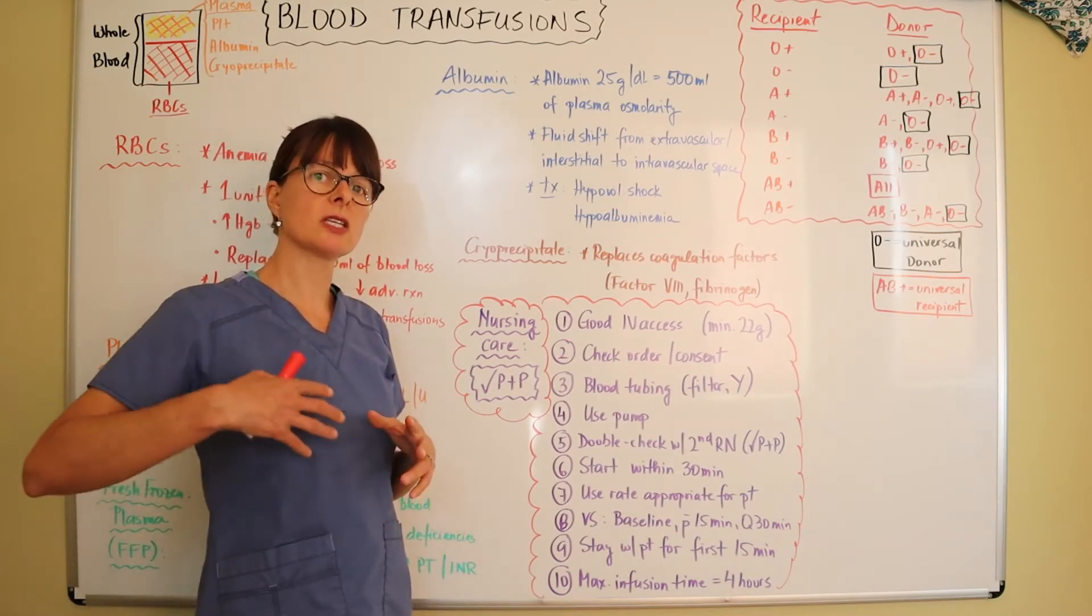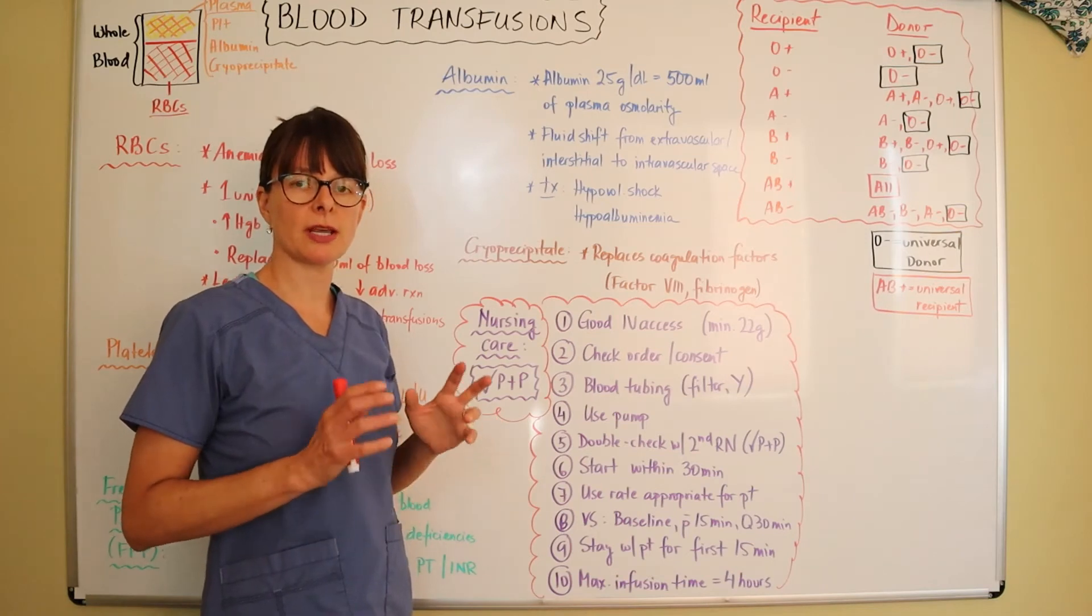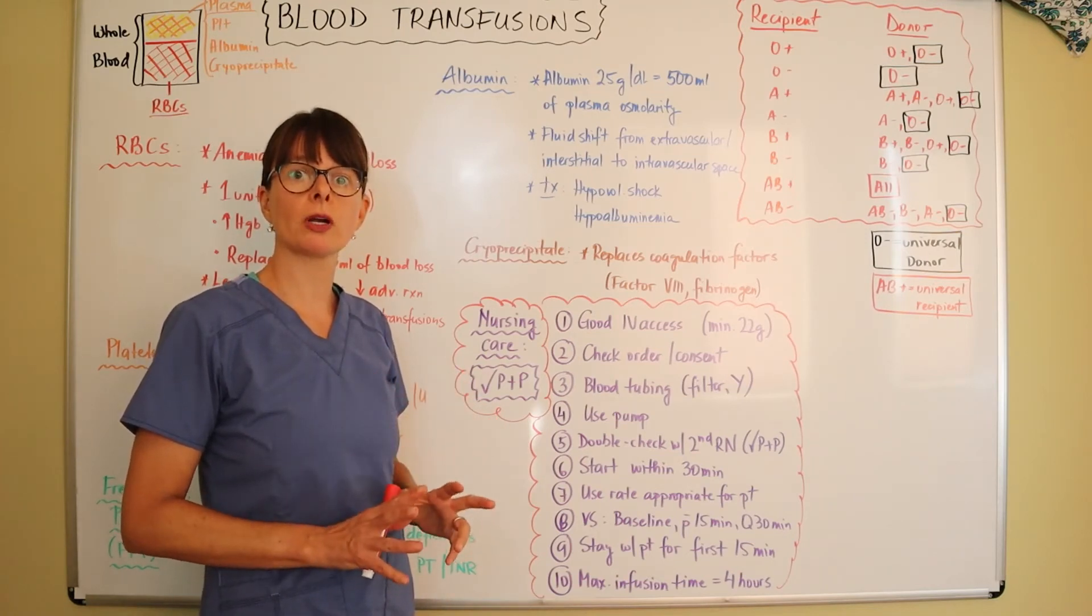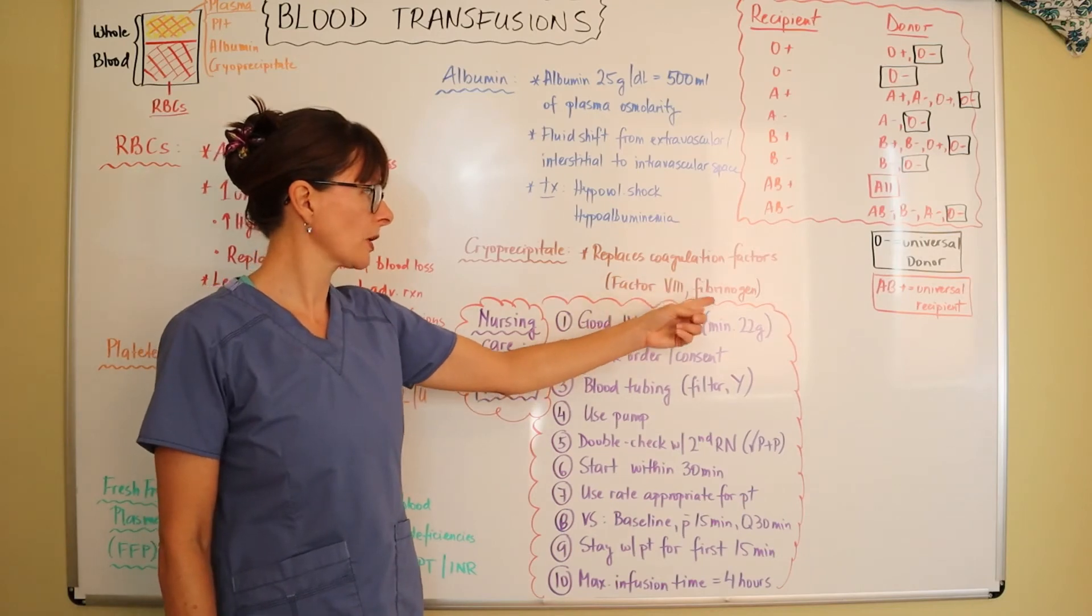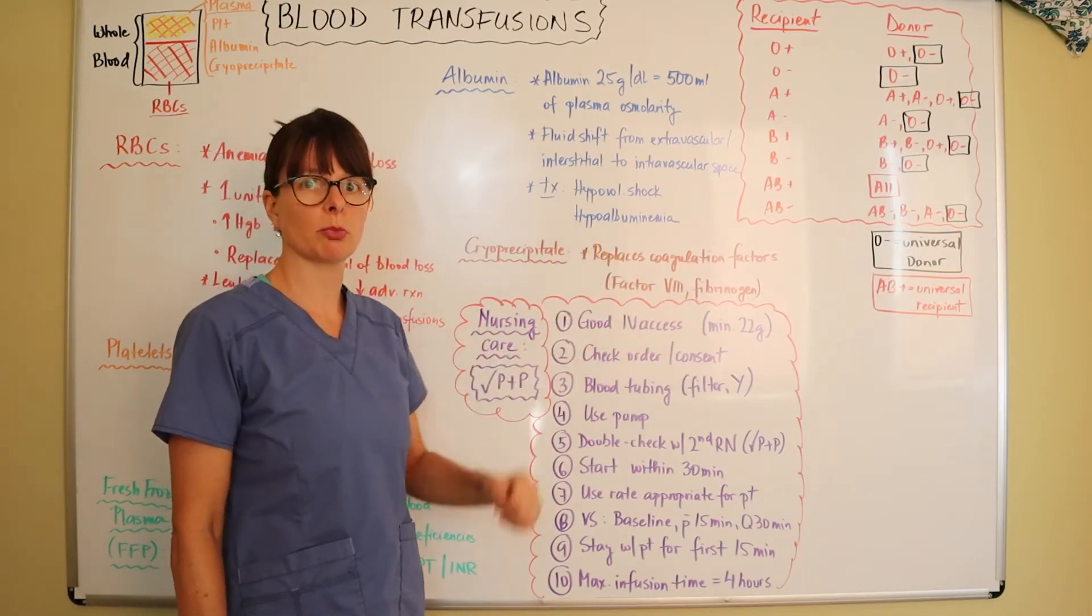The condition specifically where we need to replace fibrinogen is DIC or disseminated intravascular coagulopathy, which is a sequence of events that can occur due to multiple conditions and puts the patient in a very critical bleeding state. So in order to give them these coagulation factors as well as the fibrinogen, it's going to be super important.